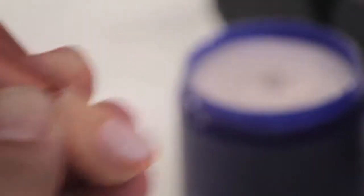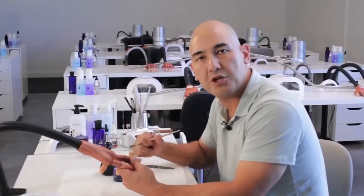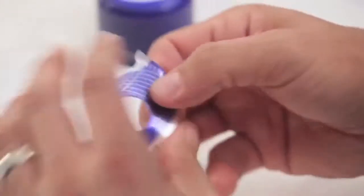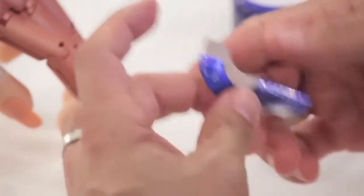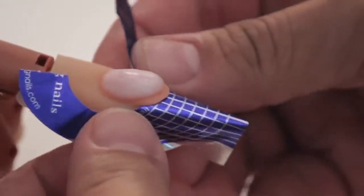Once I am done building the perfect smile line, I am now ready to apply my form and get ready to sculpt the free edge. I am now going to take a nail form, apply the tab underneath the center, pre-pinch, allowing me to create the perfect C curve. When I get it onto the finger, I want to make sure that it's touching flush to the natural nail.